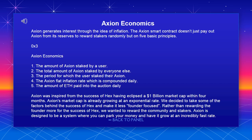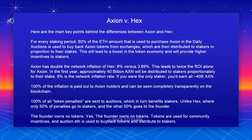Axion is designed to be a system where you can park your money and have it grow at an incredibly fast rate. Axion vs Hex: for every staking period, 80% of the ETH amount used to purchase Axion in the daily auctions is used to buy back Axion tokens from exchanges, which are then distributed to stakers in proportion to their stakes.